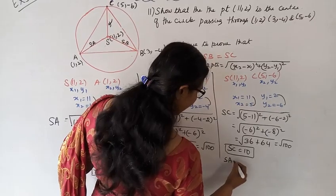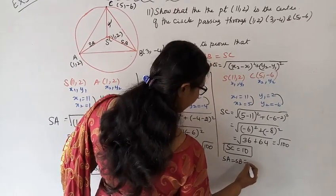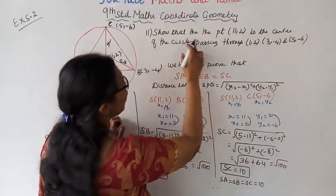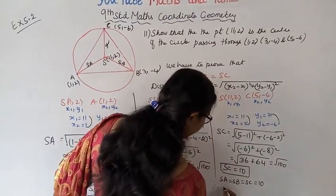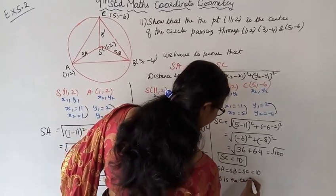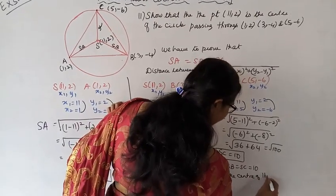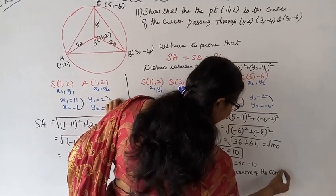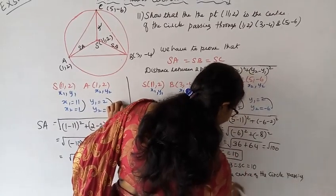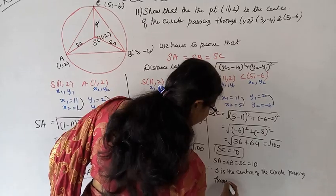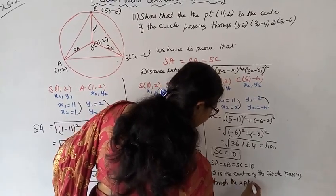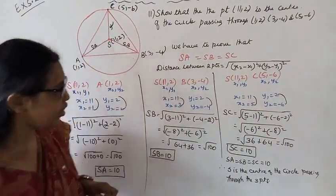Therefore SA = SB = SC = 10. Hence S is the center of the circle passing through the three points, which is proven.